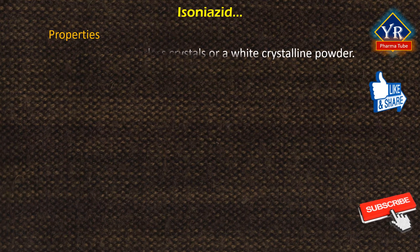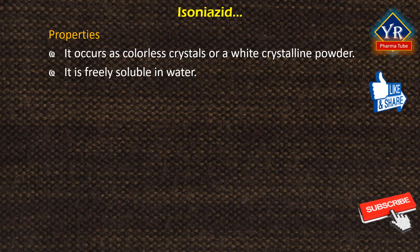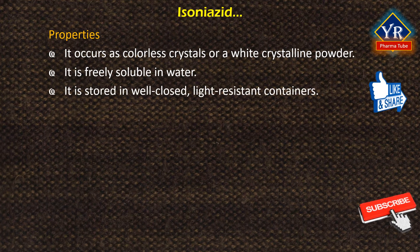Isoniazid occurs as colorless crystals or a white crystalline powder. It is freely soluble in water and stored in well-closed, light-resistant containers. It is a water-soluble compound and well-absorbed when administered either orally or parenterally.